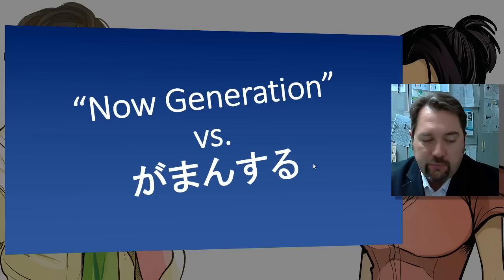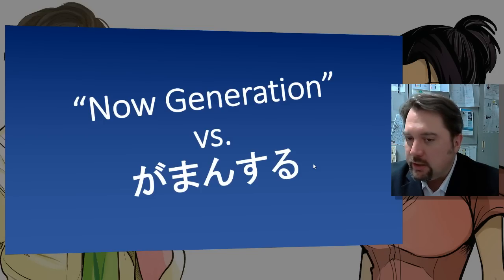On the other side, there's the concept of 'gaman suru.' 'Suru' means 'to do,' and 'gaman' translates as patience — but it's more than that. It's willful patience: holding yourself back on purpose for the good of either the long term or the good of the group. It's self-restraint, and this term is widely used all over Japan. It's very hard to translate into English, and it exemplifies the idea of a less indulgent society here in Japan.